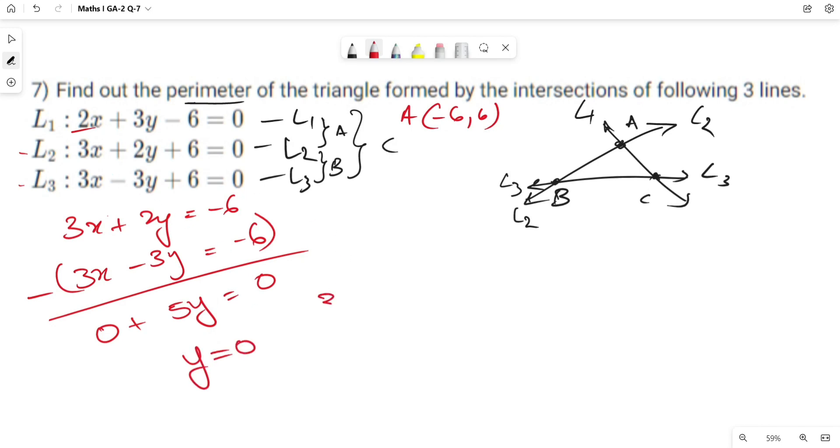Putting y equals 0, we get 3x equals minus 6, so x equals minus 2. Point B is (minus 2, 0).